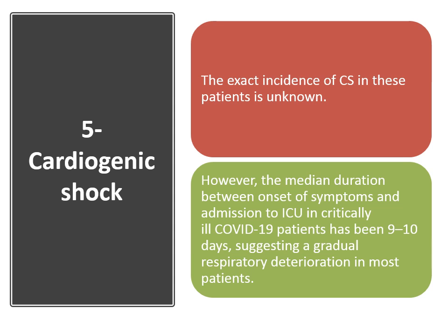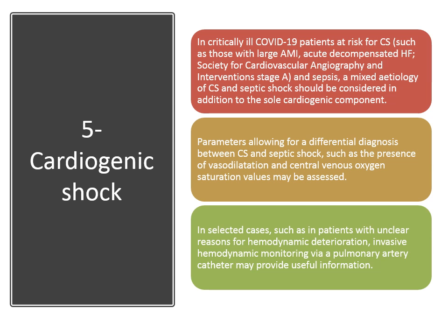The median duration between onset of symptoms and admission to ICU in critically ill COVID-19 patients has been 9 to 10 days, suggesting a gradual respiratory deterioration in most patients. In critically ill COVID-19 patients at risk for cardiogenic shock — such as those with large MI, acute decompensated heart failure, SCAI stage A, and sepsis — a mixed etiology of cardiogenic shock and septic shock should be considered. Parameters allowing differential diagnosis, such as vasodilatation and central venous oxygen saturation, may be assessed.